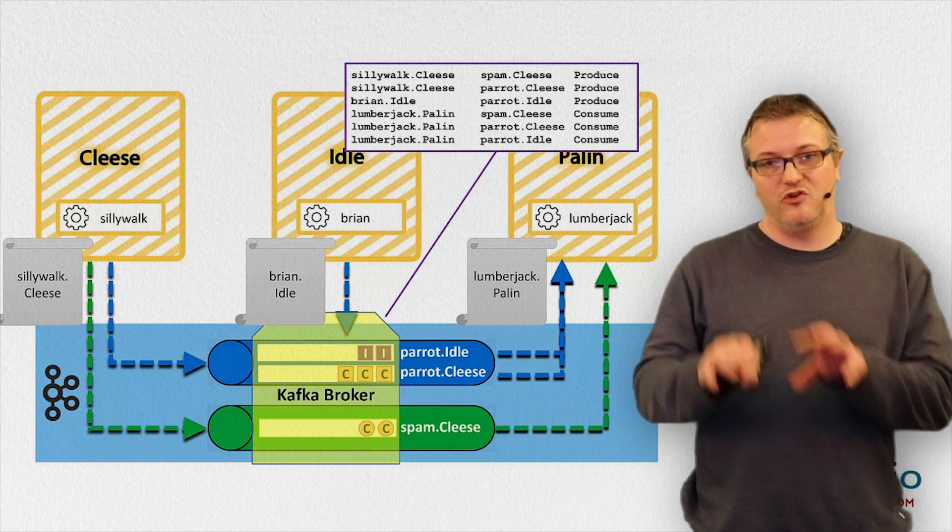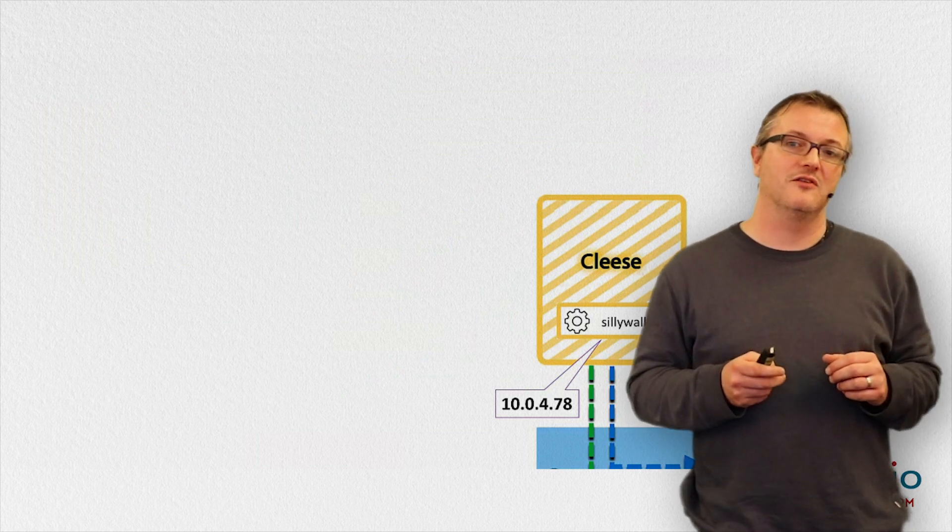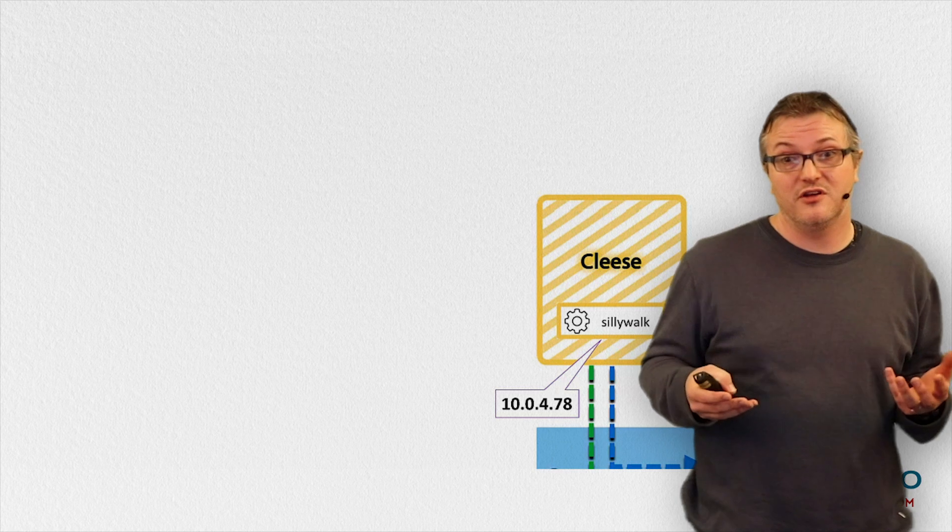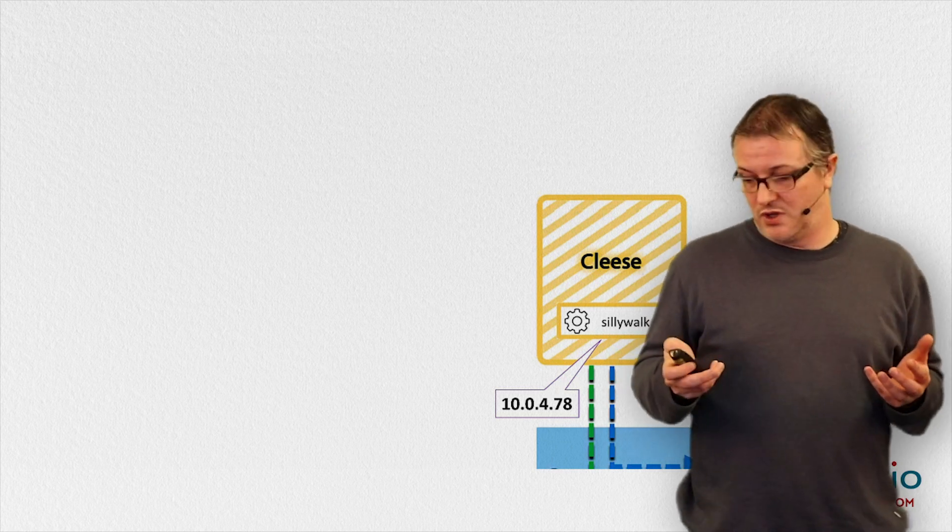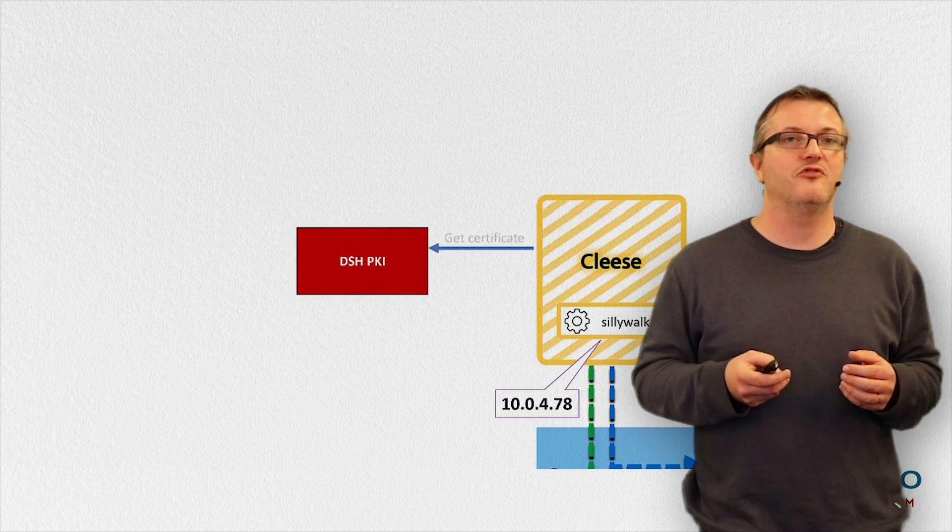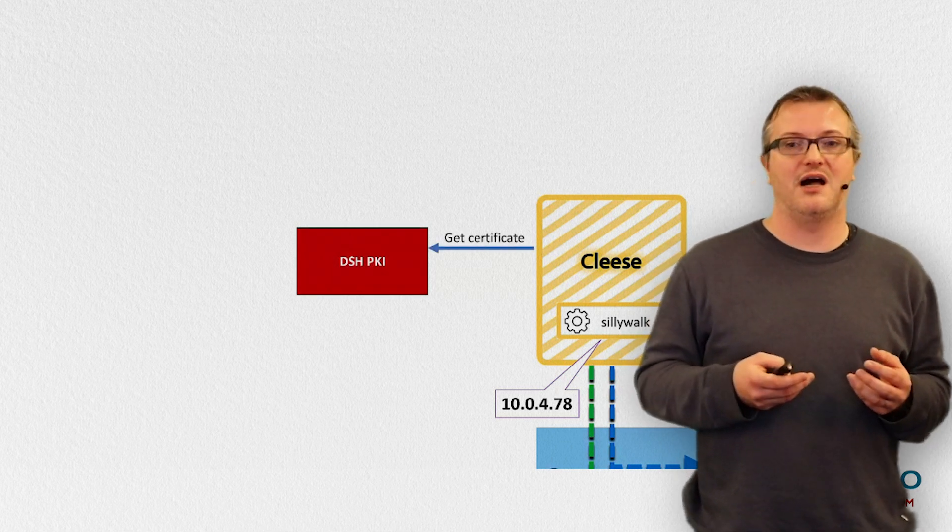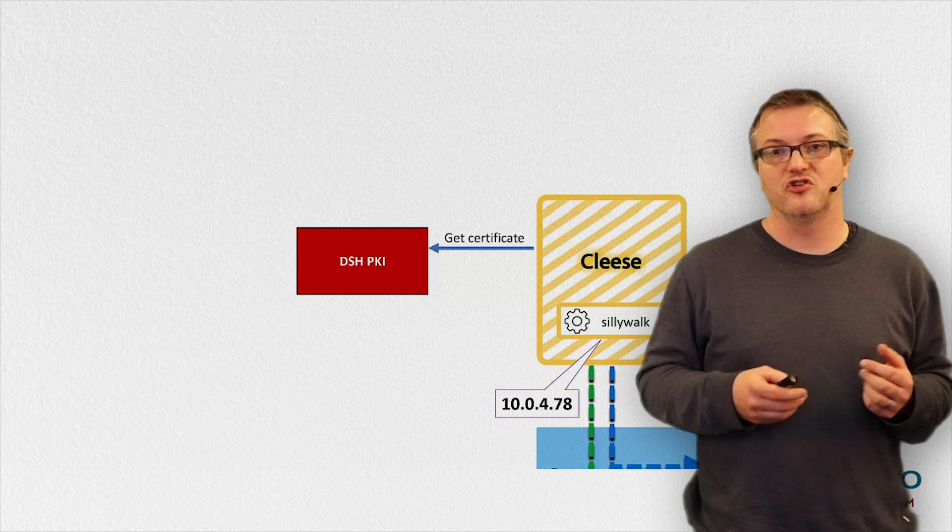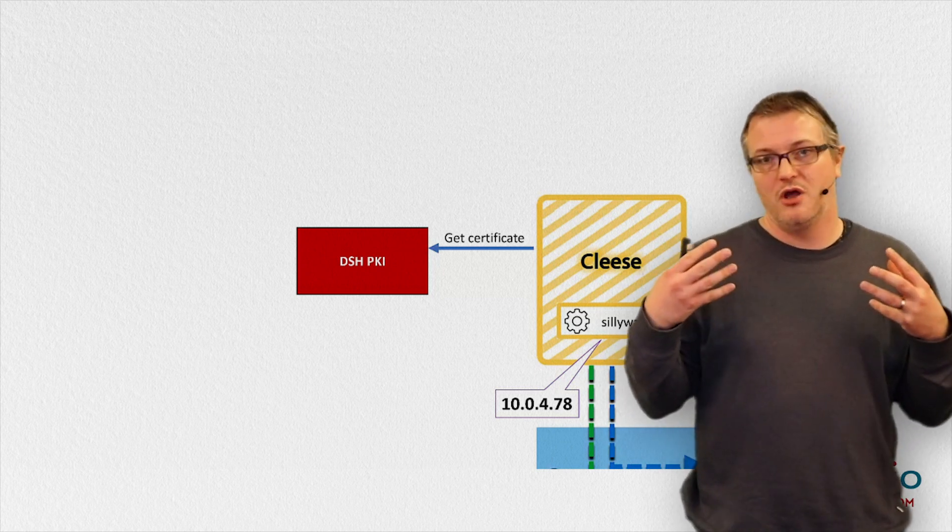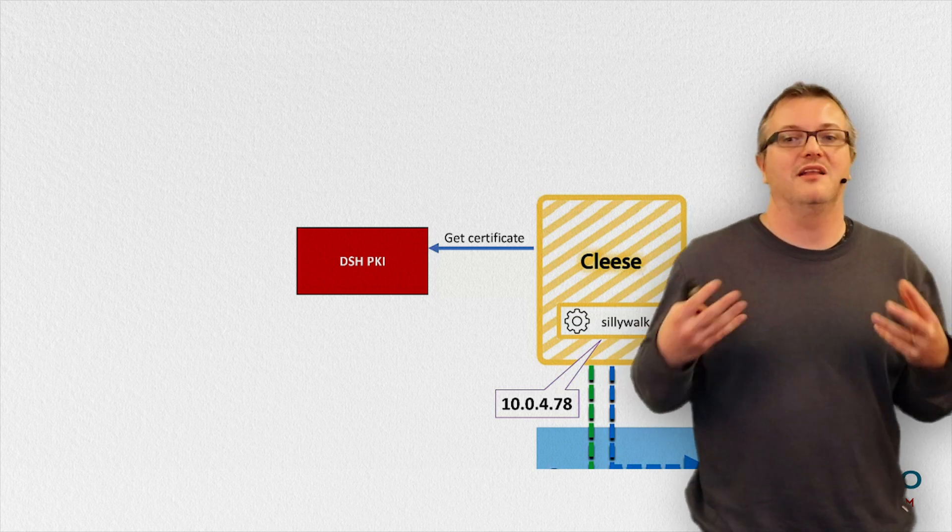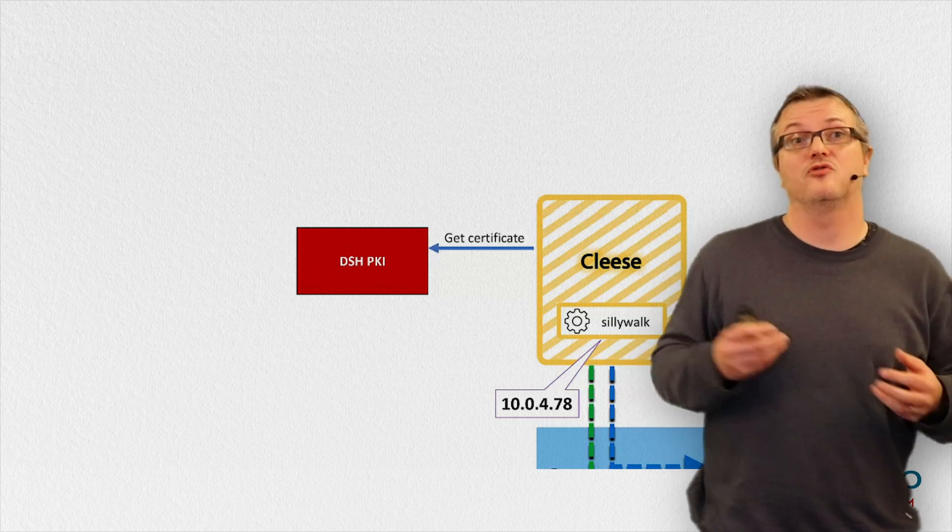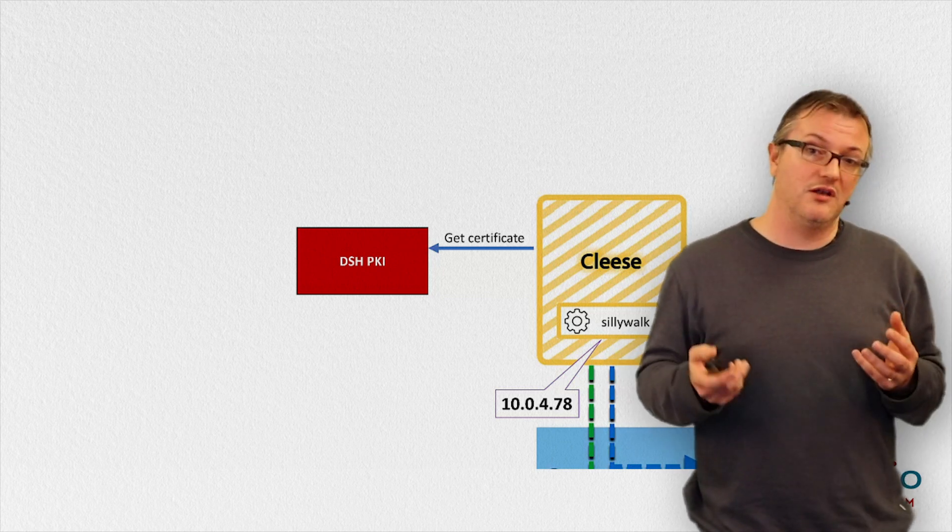And for that we zoom in on the sillywalk container in tenant.cleese. So the container starts up. It doesn't yet have a certificate. How does it get one? For that it reaches out to a particular piece of DSH infrastructure called the DSH PKI or public key infrastructure. It posts a request to get the certificate, but the PKI needs to somehow verify the identity of the requester before it can hand out a certificate. How can it do this?